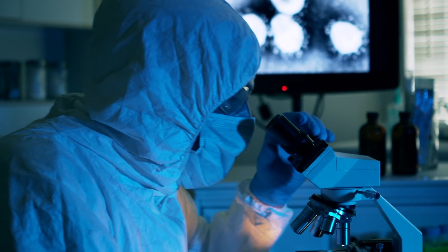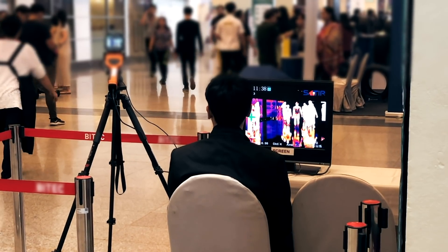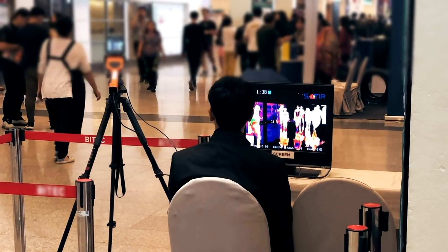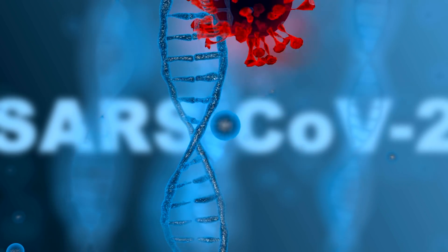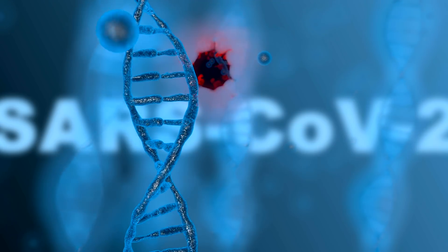There are two types of tests being worked on. Diagnostic tests, which identify people who currently have coronavirus, and antibody tests. These look for antibodies in the blood to see if a person ever had the virus in their system, and if they did, when.